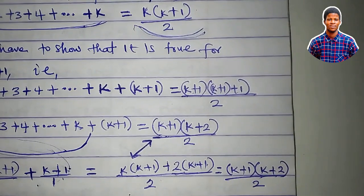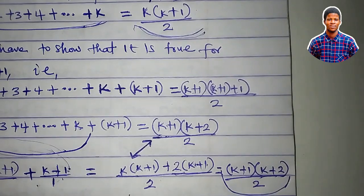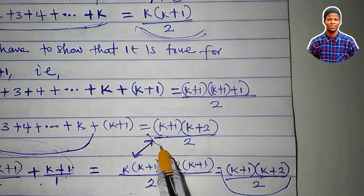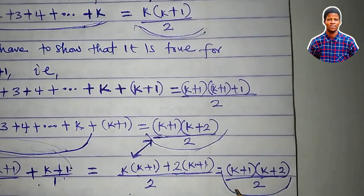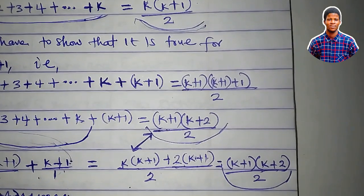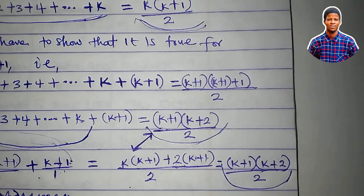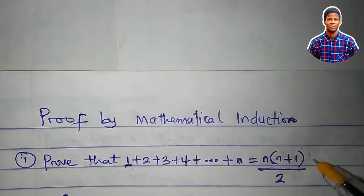You can see now that the expression we've gotten is exactly what we needed to show. So it is true for n equal to k plus 1, and by this it means that it is universally true for all n. This holds.